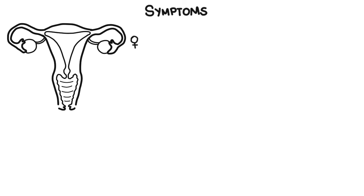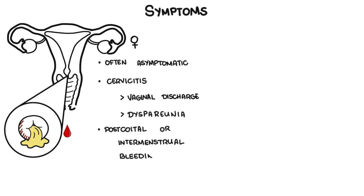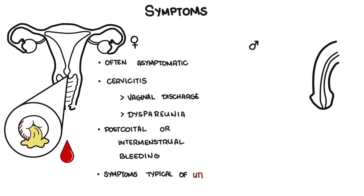The symptoms of chlamydia infection can range and are slightly different between males and females. In females, chlamydia infections can often be asymptomatic, meaning they have no symptoms. However, inflammation of the cervix, termed cervicitis, can cause vaginal discharge and pain with sex, termed dyspareunia. There can be post-coital or inter-menstrual bleeding. Infection of the female urethra can cause symptoms of a urinary tract infection, such as frequency and dysuria. In males, infection of the urethra causes urethritis, and can cause pain on urination, dysuria, and scant watery discharge.